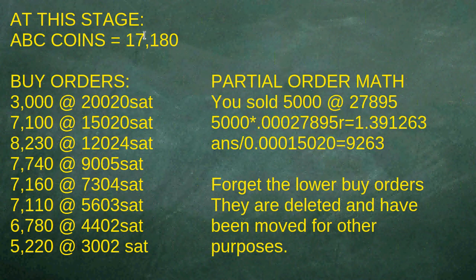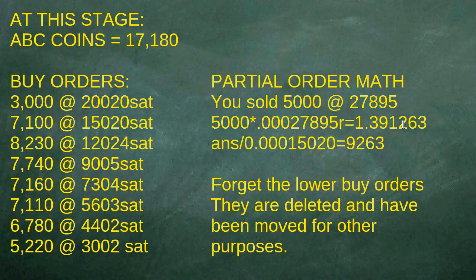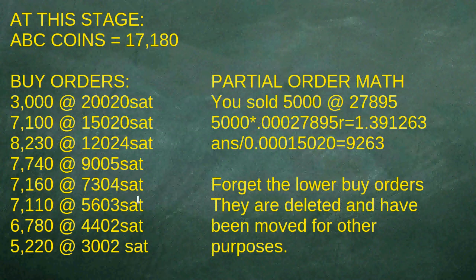After selling the 3,000 coins, that brings it down to 17,000. The list of buy orders going through: 20,000, 15, 12, 9,000, 73, 56, 44, and 3,000. Partial order math: we sold 5,000 earlier at the 28 handle, so 5,000 multiplied by the rate is 1.39; divided by the buyback price of 15,000 that's 92.63. I want a number between 5,000 and 92, which is 71. Orders below 3,000 satoshi I want to delete — if price goes lower I can re-enter those orders.